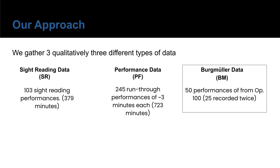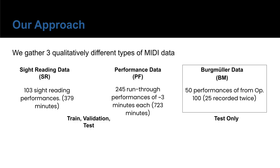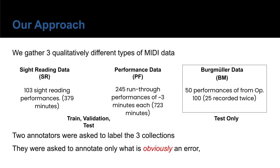We gathered first the sight-reading data, which are 103 sight-reading performances, and performance data, which is 245 run-through performances of classical piano pieces. These run-throughs are not perfect, so they include repetitions and salient mistakes. Finally, we have two performances of each of the 25 etudes in Burgmüller Opus 100. The first two are used for training, validation, and testing, and the last one is only used for testing.